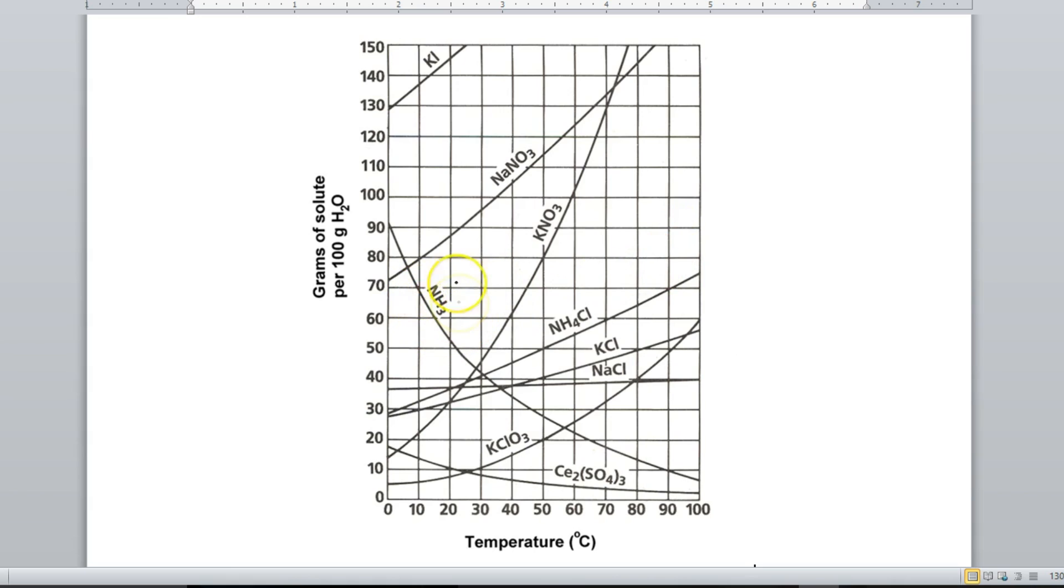However, for substances like NH3, you can see there is a decrease in solubility. That's because this is a gas. So for solids, there's an increase in solubility when you increase temperature. For gases, it's the exact opposite. When you increase the temperature, there is a decrease in solubility.